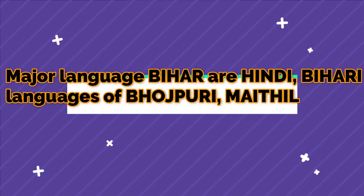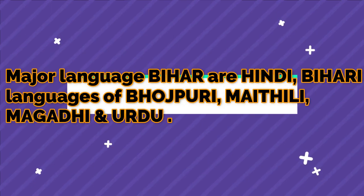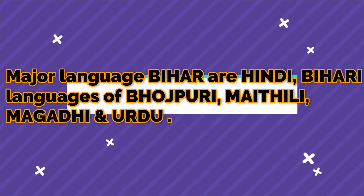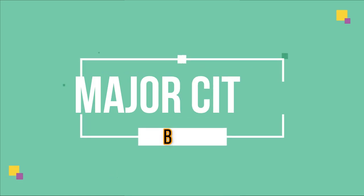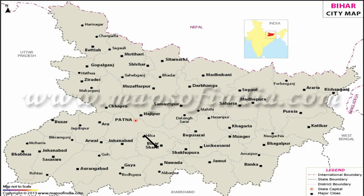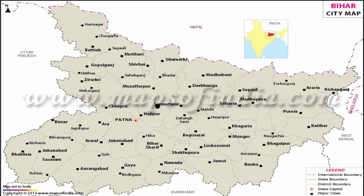The main languages spoken in Bihar are Hindi, Urdu, and the Bihari languages of Bhojpuri, Maithili, and Magahi. The major cities of Bihar are Patna, Gaya, Bhagalpur, Muzaffarpur, Darbhanga, and Munger.